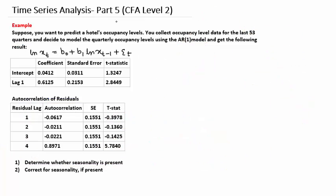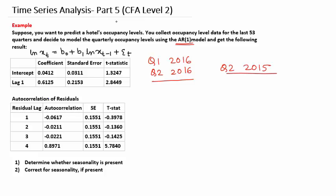This means that if the current quarter is Q2 2016, then Q2 2016 occupancy levels are related to Q1 2016 occupancy levels — that is why we used an AR1 model. But because of seasonality, Q2 2016 occupancy levels are also related to the corresponding quarter in the previous year, which is Q2 2015.